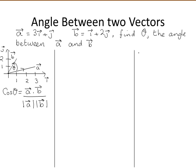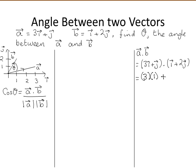We'll find the dot product of A with B. This equals 3i plus j dotted with i plus 2j. From the definition of the dot product, multiply the i coefficients and add to the product of the j coefficients: 3 times 1 plus 1 times 2, which equals 3 plus 2, which is 5.